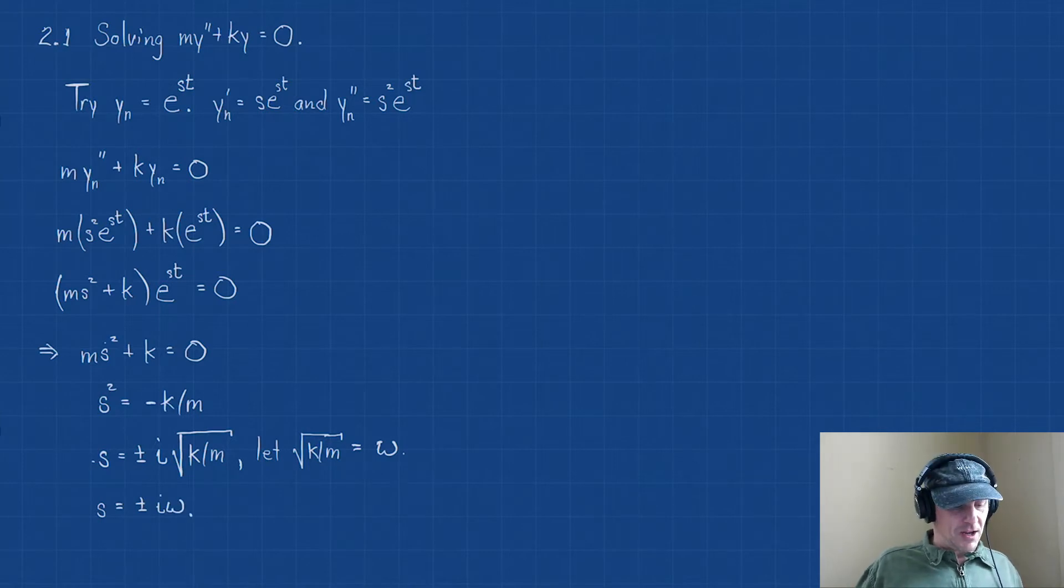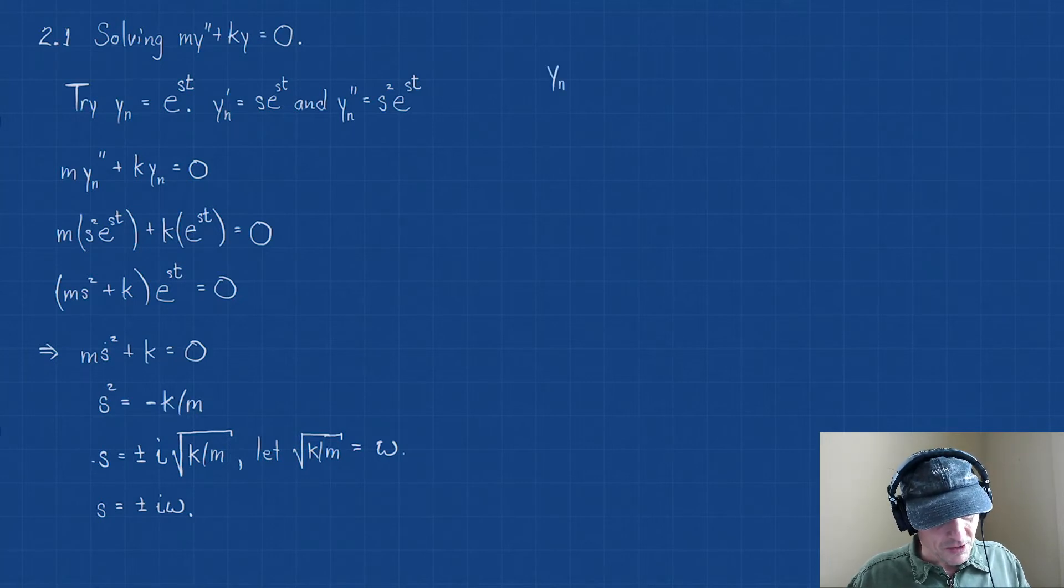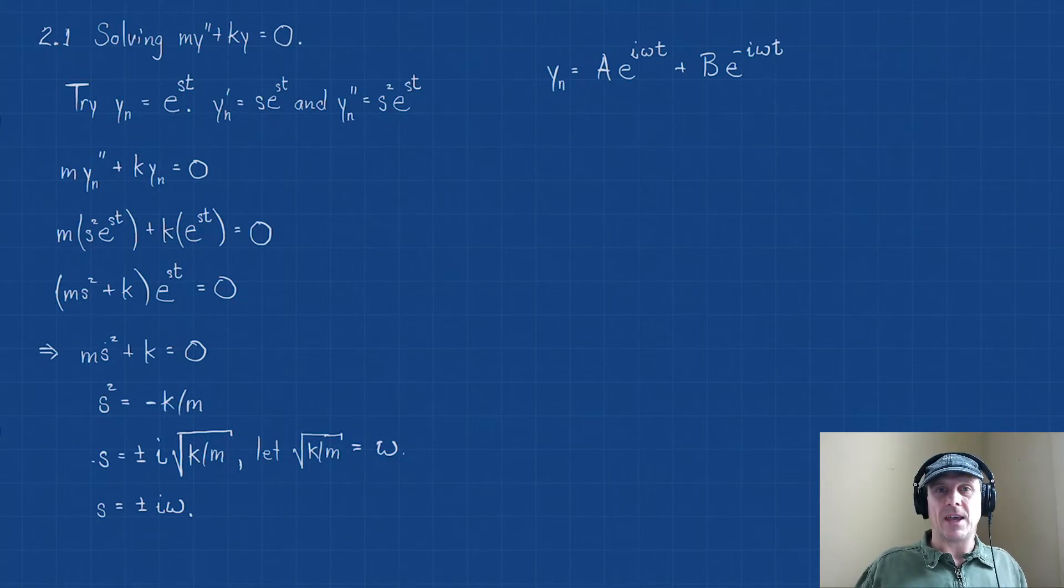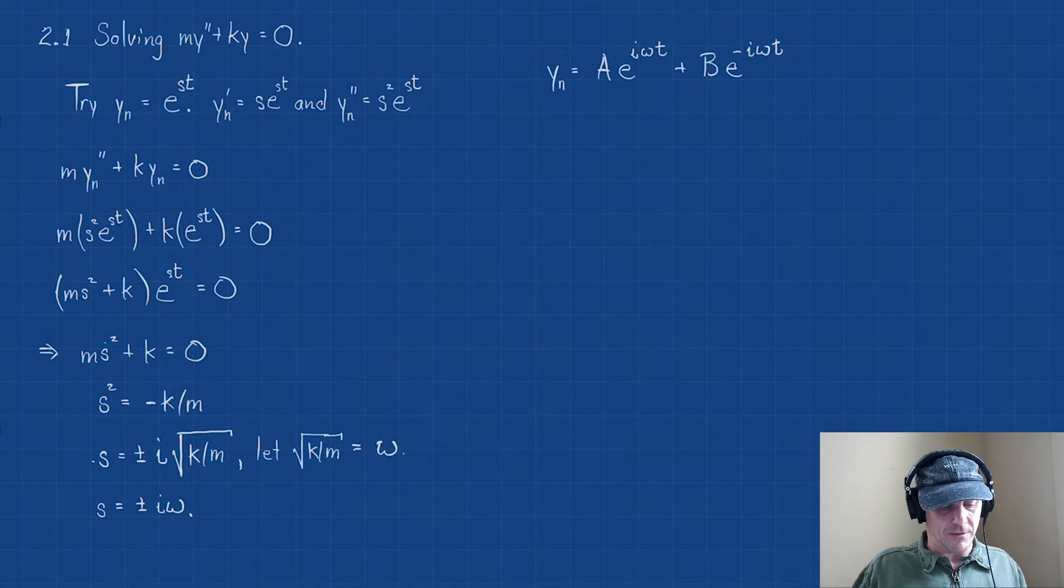Let's write out our solution. Notice there's two solutions. So our null solution, what this is telling me is y_n = A·e^(iωt) + B·e^(-iωt). Now remember that a and b, those are just some constants, and we've already shown that constants do not affect the null solution. Those constants will be determined based on some initial conditions for the problem.